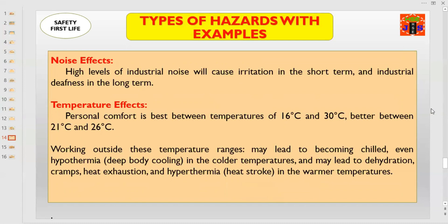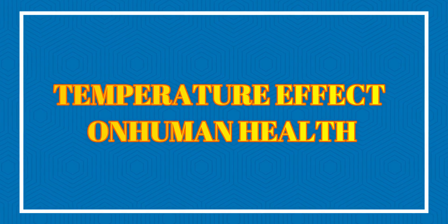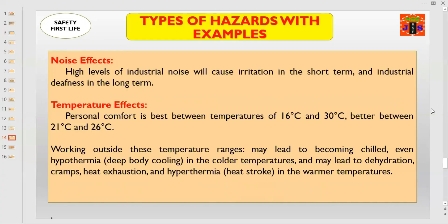Another important hazard is temperature. Personal comfort is best between 16°C and 30°C, and better between 21°C and 26°C. Working outside this ideal range of 21 to 26°C may lead to becoming chilled or even hypothermia — deep body cooling — in colder temperatures, and may lead to dehydration, cramps, heat exhaustion, and heat stroke in warmer temperatures. Heat stroke is a critical emergency condition; death is imminent if the patient is not treated properly by a professional team.